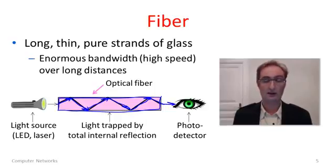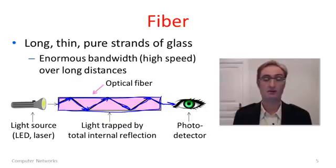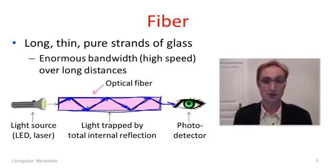Fiber compared to wire is able to transfer enormous amounts of bandwidth — very high data rates over very long distances. This is because of its physical properties: fiber allows very wide ranges of frequencies through, and it also attenuates signals very little because it's very pure. Light just tends to travel right through it, so signals can go for a long way before they're attenuated.